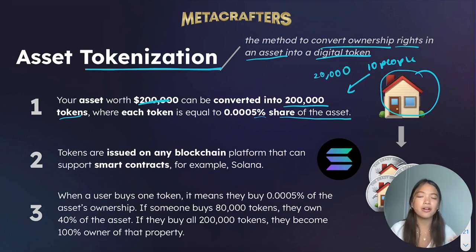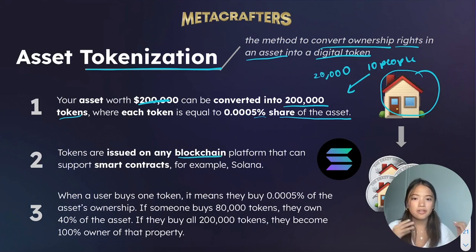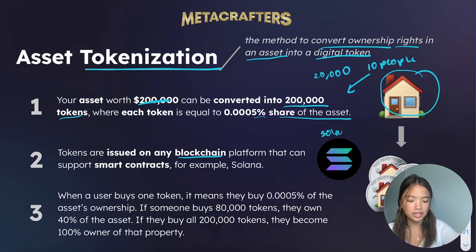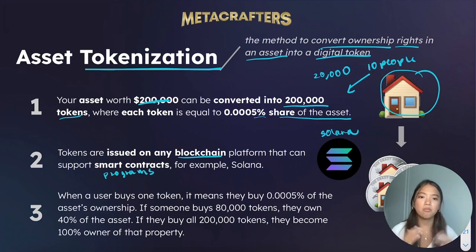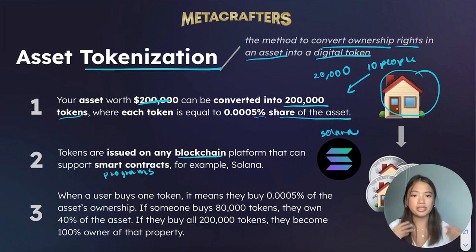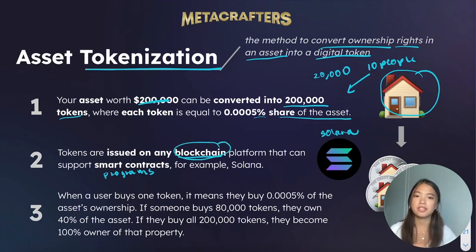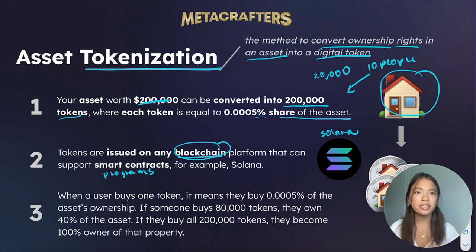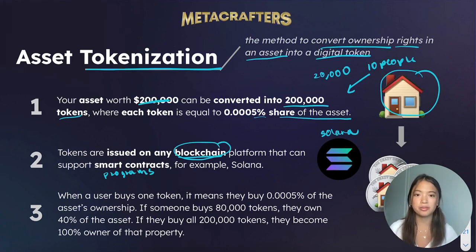These tokens are issued on a blockchain platform that can support smart contracts. For example, we can put these tokens on the Solana blockchain so that we can execute programs — which is the same thing as smart contracts — with these tokens. Let's say that somebody is renting out the house and has to pay these 10 people. Through the blockchain platform, because all of these tokens and ownership is recorded on Solana, we can create a smart contract to transfer these funds to the 10 people who own the house.